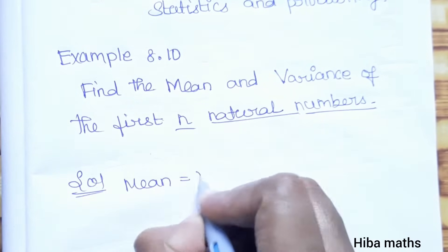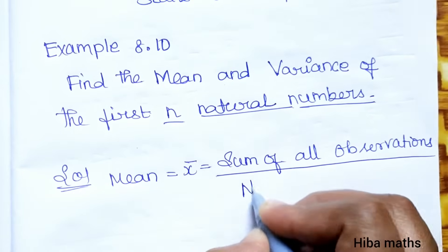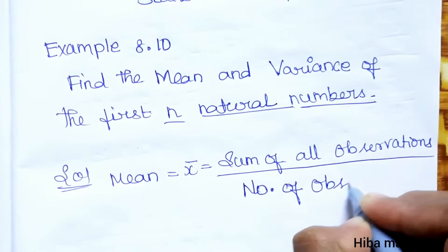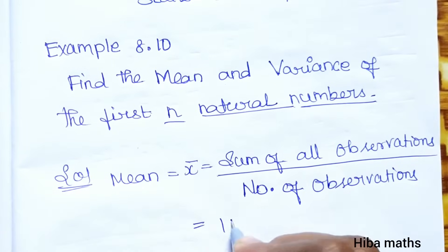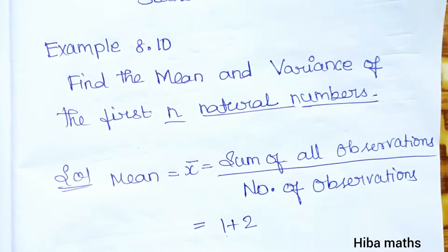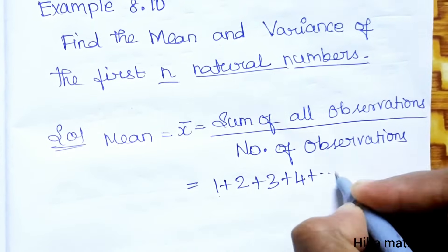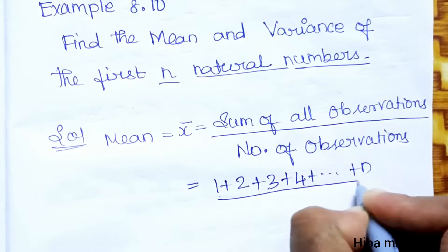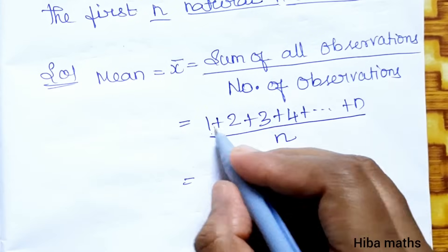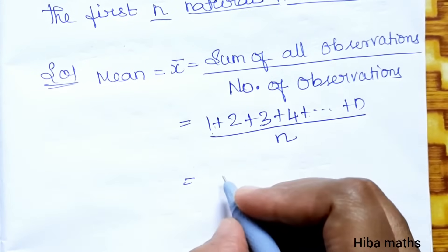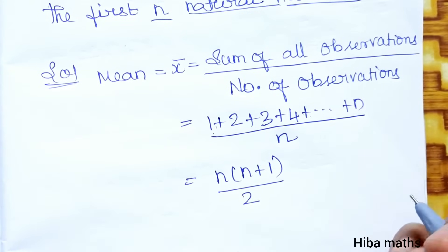We call the mean formula: sum of all observations divided by number of observations. That is equal to sum of all natural numbers, 1 plus 2 plus 3 plus 4 up to n, divided by number of observations. Now sum of natural numbers, there is a value n into n plus 1 divided by 2.